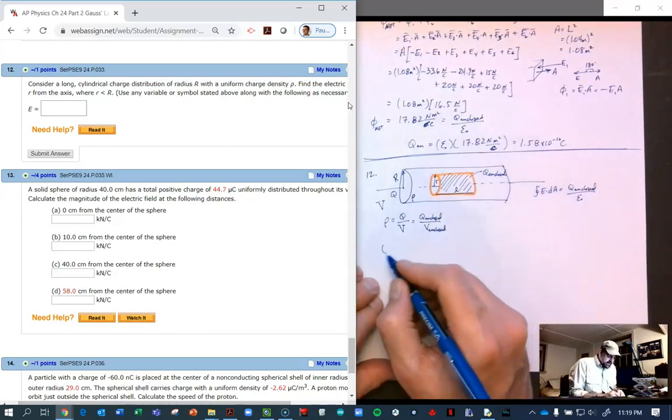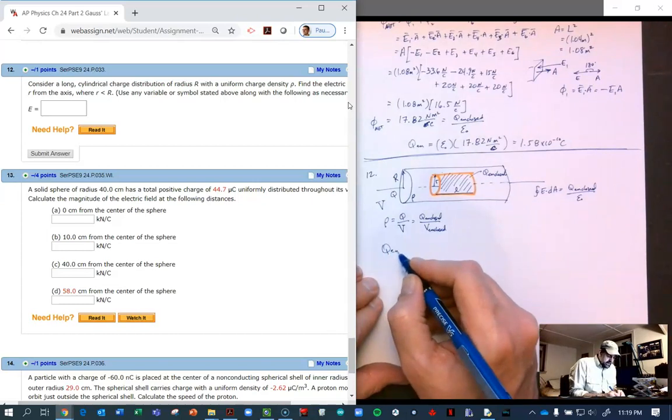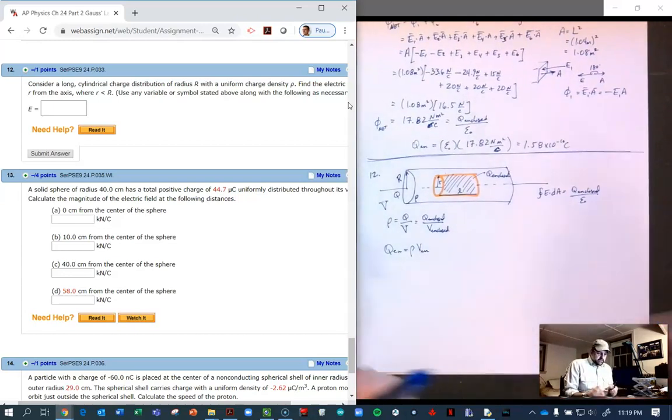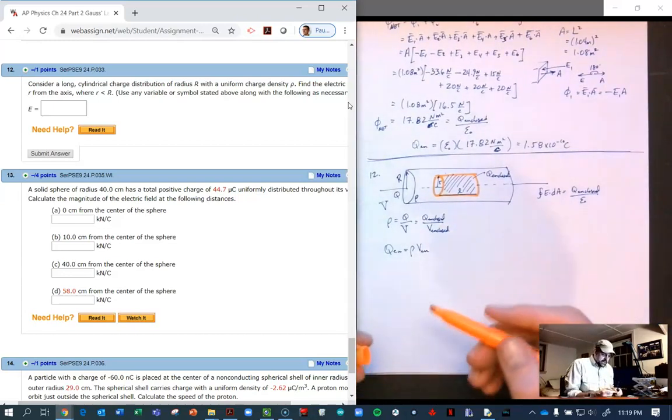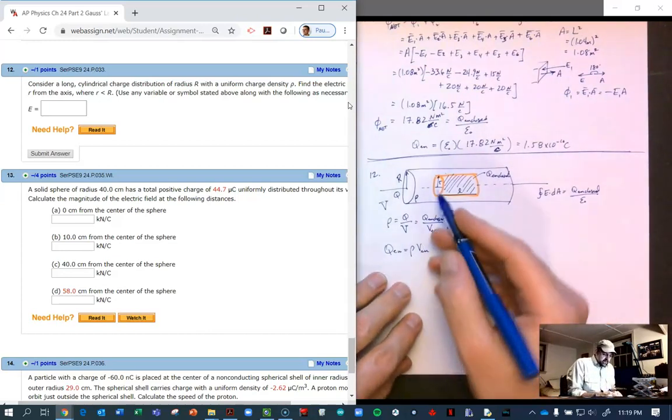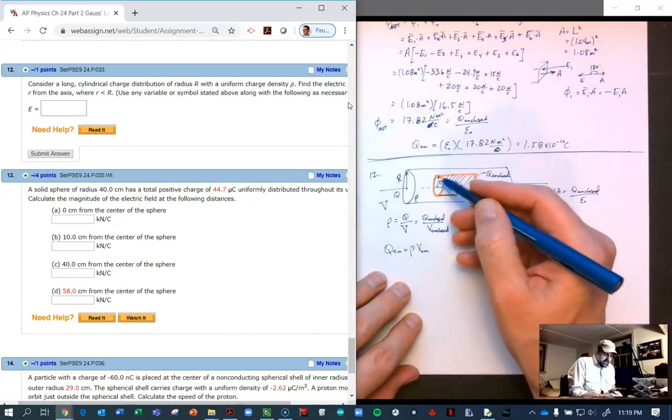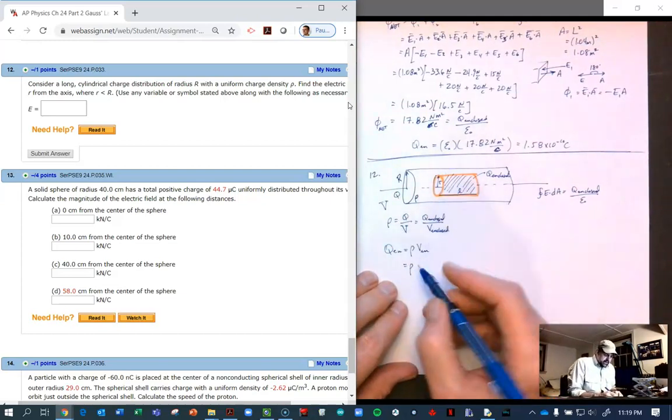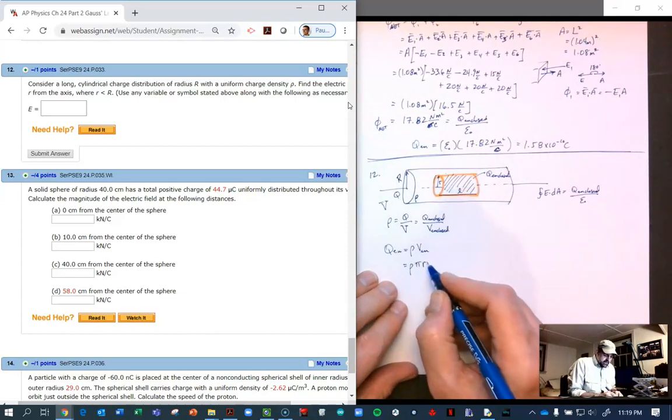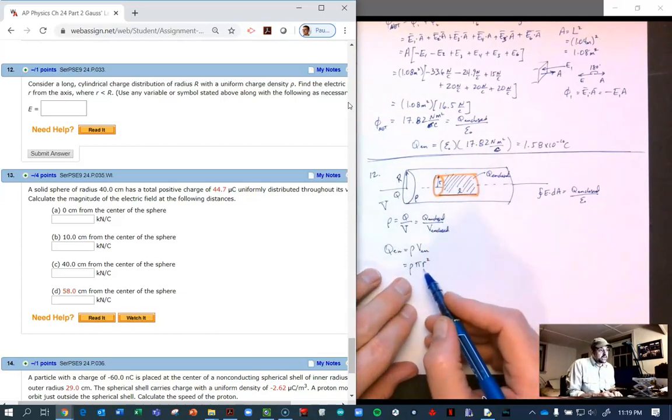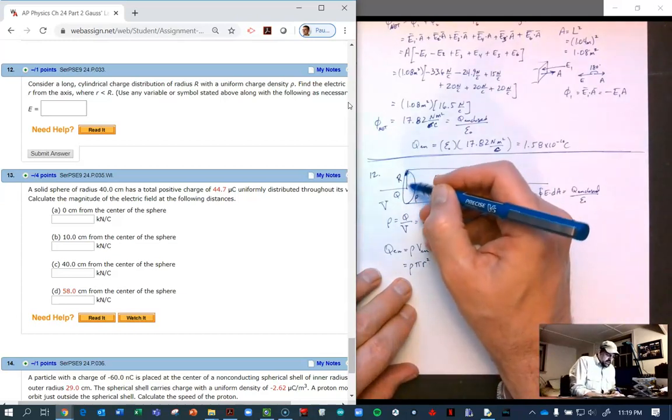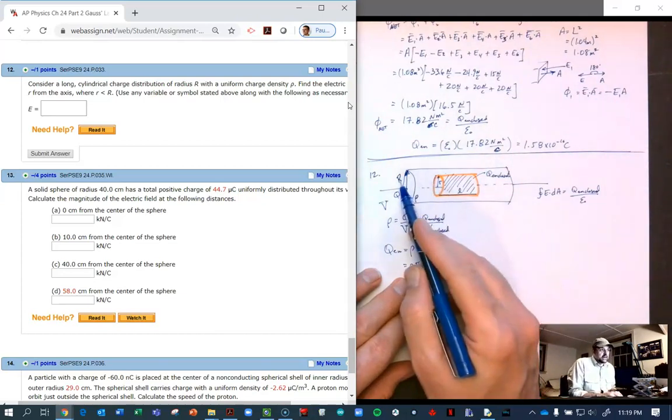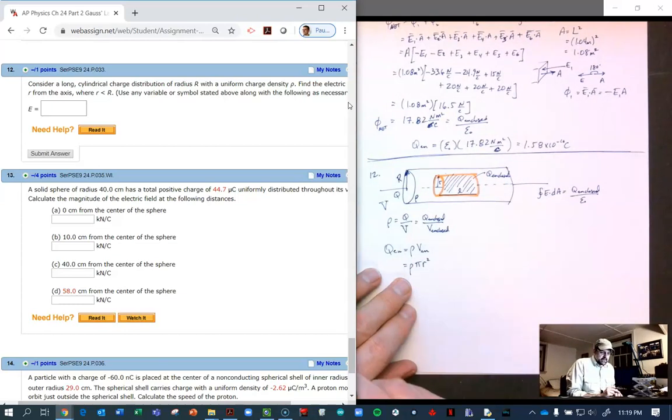Q enclosed equals ρ times the volume enclosed. The volume is the area of the side times the length, and that area is π r squared, little r squared. It's important to remember which r you're talking about. Big R doesn't really come into play in this problem. The volume is π r squared times L.